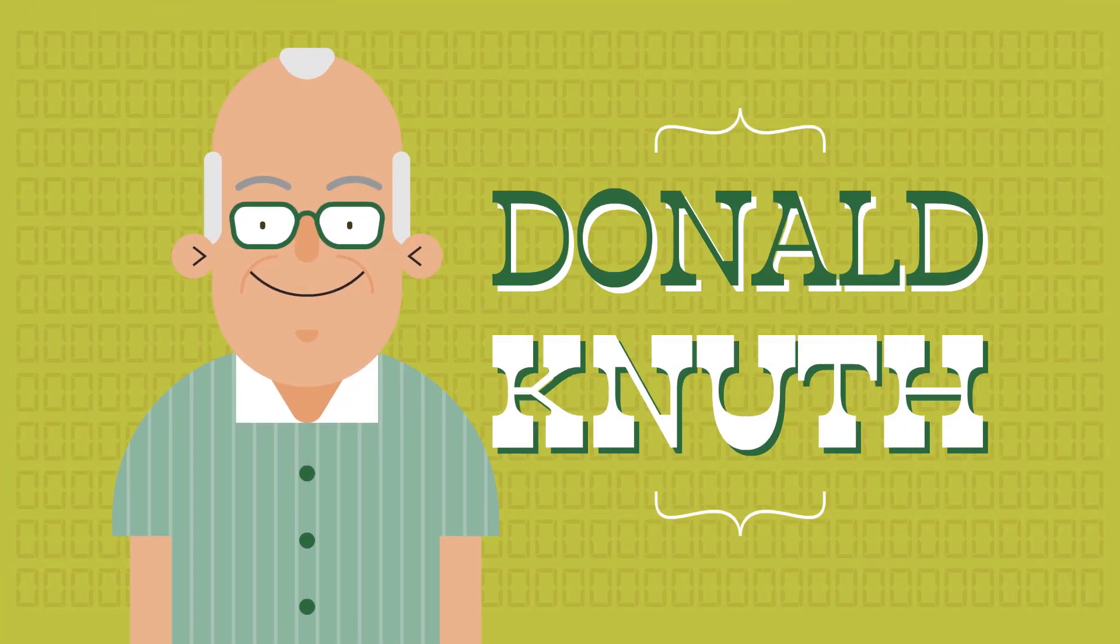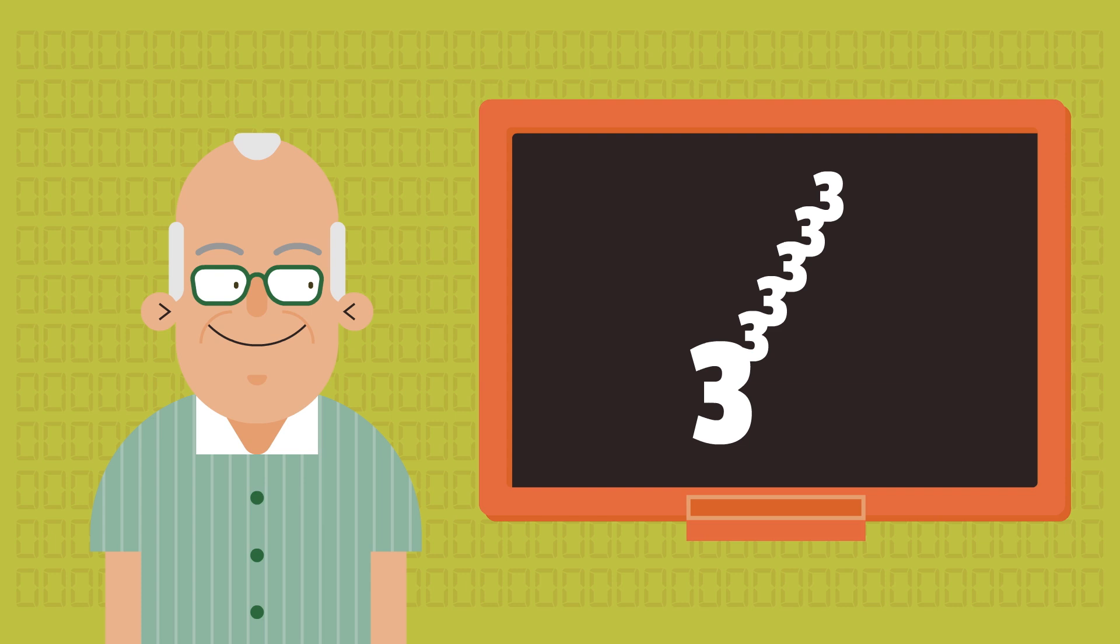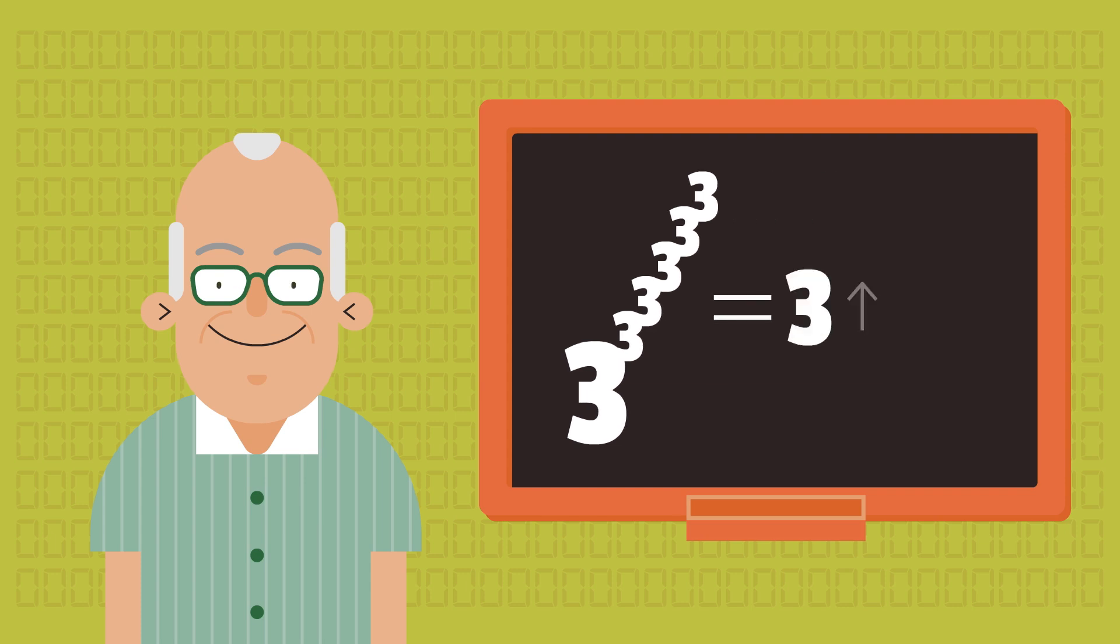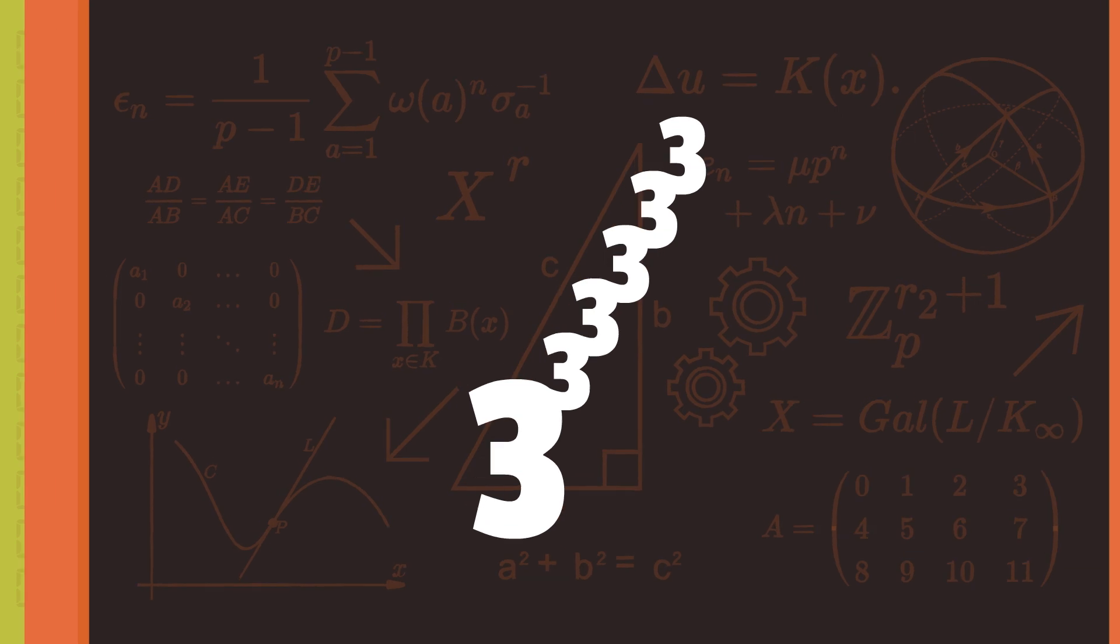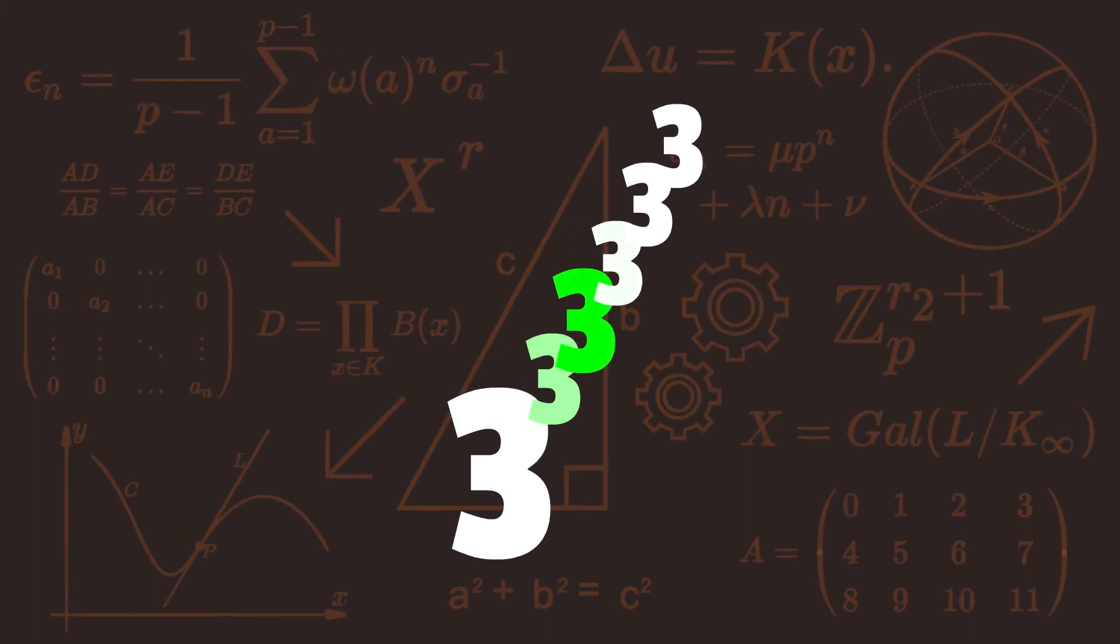The computer scientist Donald Knuth introduced a notation with a double arrow to write only the number of levels in a tower. It means a tower of 3 with 5 levels.